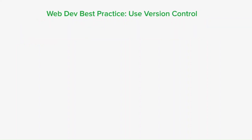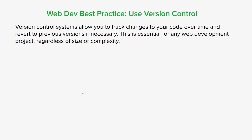The next one is using version control. Version control systems allow you to track changes to your code over time and revert to previous versions if necessary. This is really essential for any web development project regardless of size or complexity. A really good version control system to use is Git and GitHub.